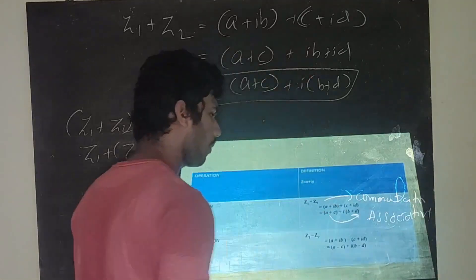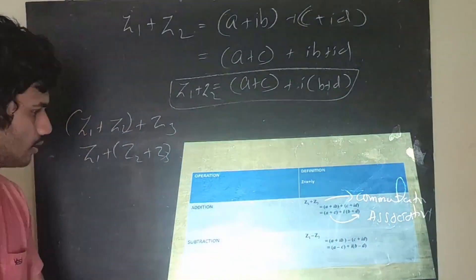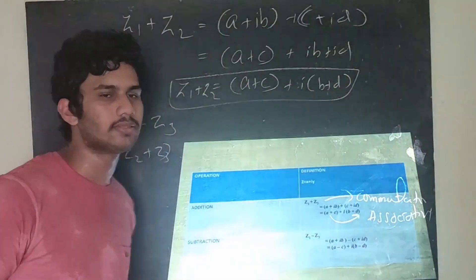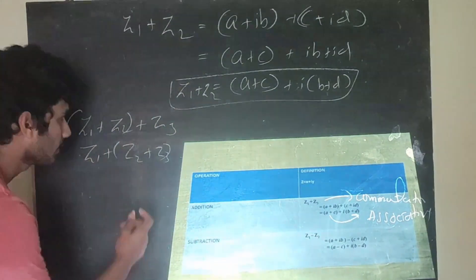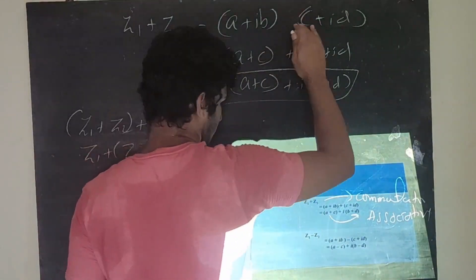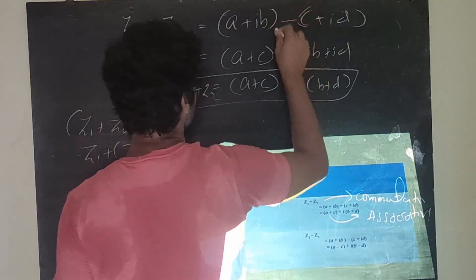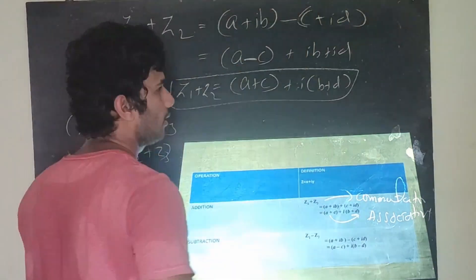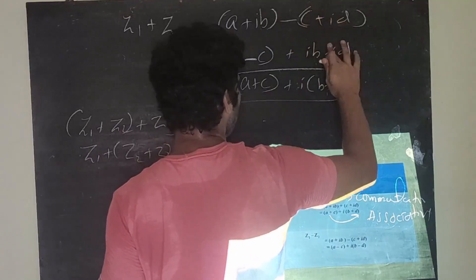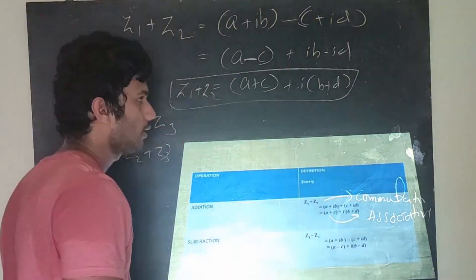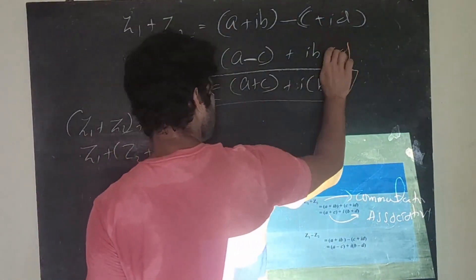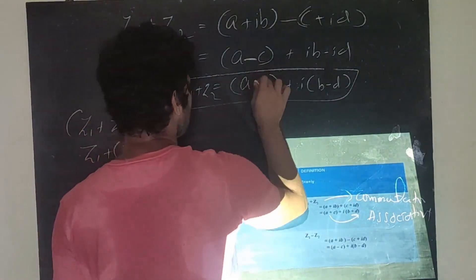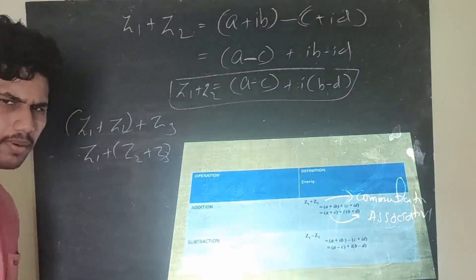Similarly for subtraction: z₁ − z₂ = (a + ib) − (c + id) = (a − c) + i(b − d). You subtract the real parts and subtract the imaginary parts separately.